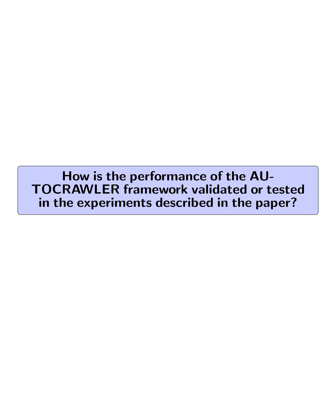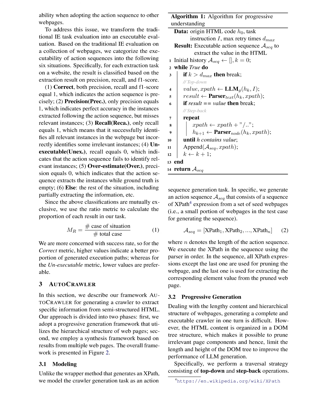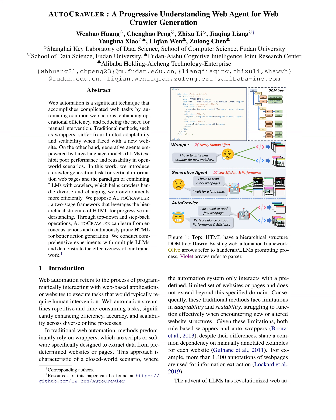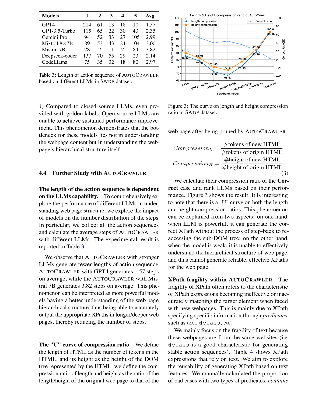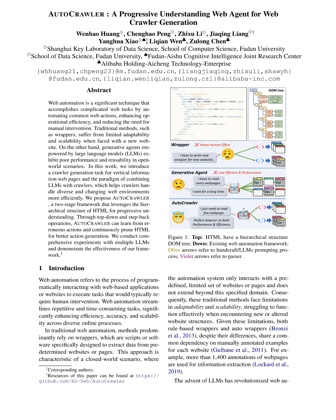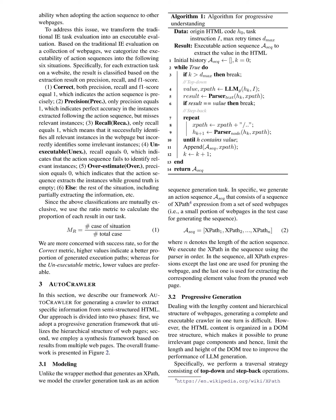How is the performance of the AUTOCRAWLER framework validated or tested in the experiments? The experiments are conducted using various LLMs, including closed-source LLMs like GPT-3.5-Turbo, Gemini Pro, and GPT-4, as well as open-source LLMs like Mistral 7B Instruct V0.2, CodeLLaMA-34B Instruct, Mixtral 8x7B Instruct V0.1, and DeepSeek Coder 33B Instruct. Different LLM prompt-based web agents, including ZS-COT and Reflection, are used as baselines. The experiments are carried out under zero-shot settings.